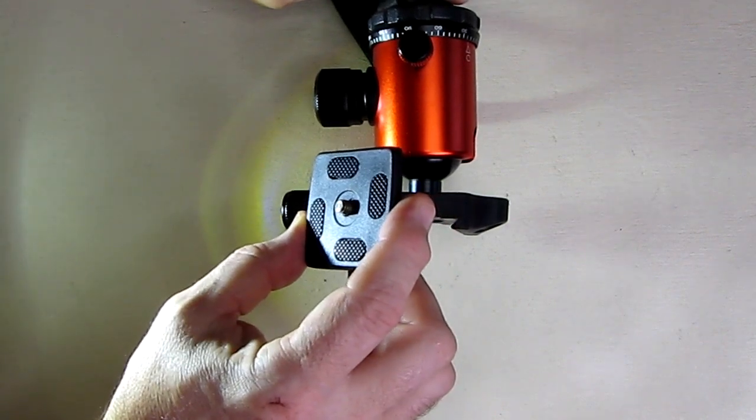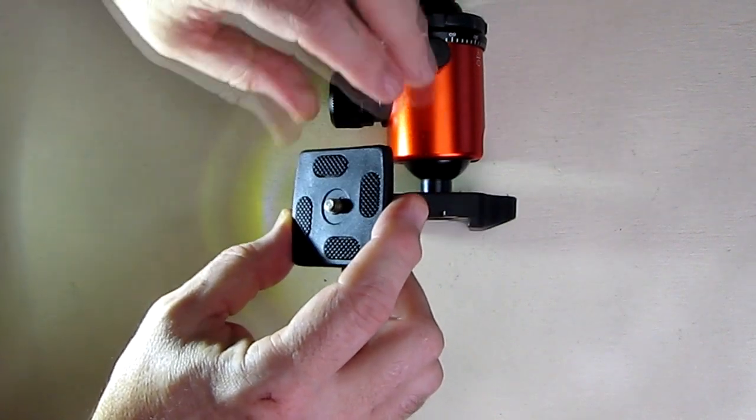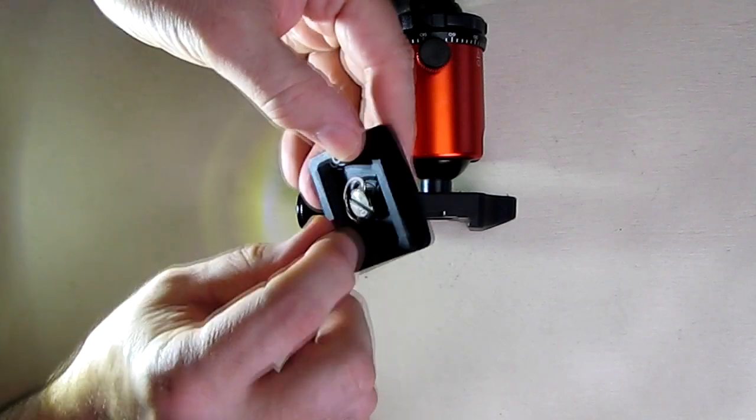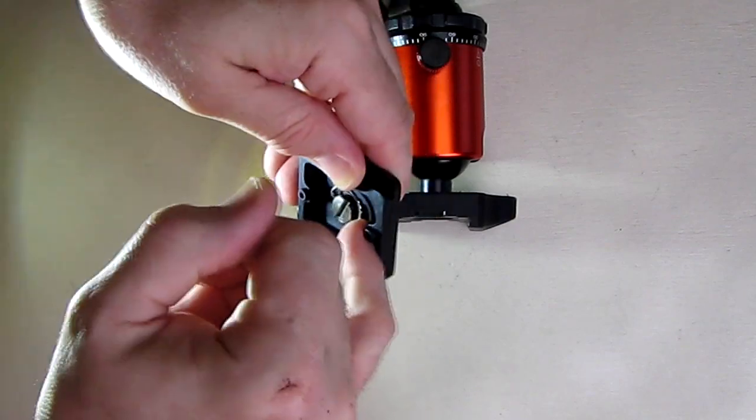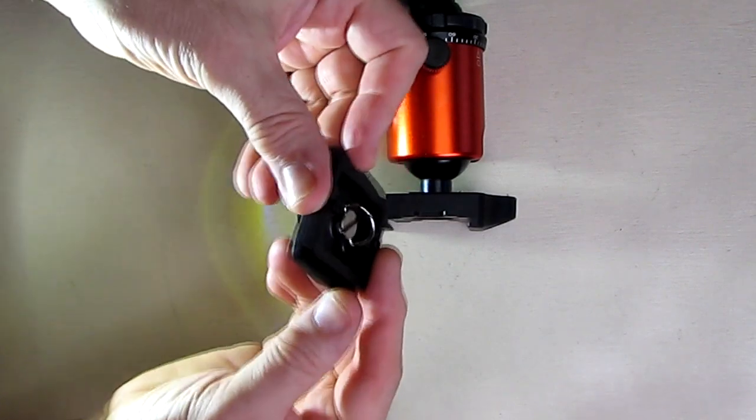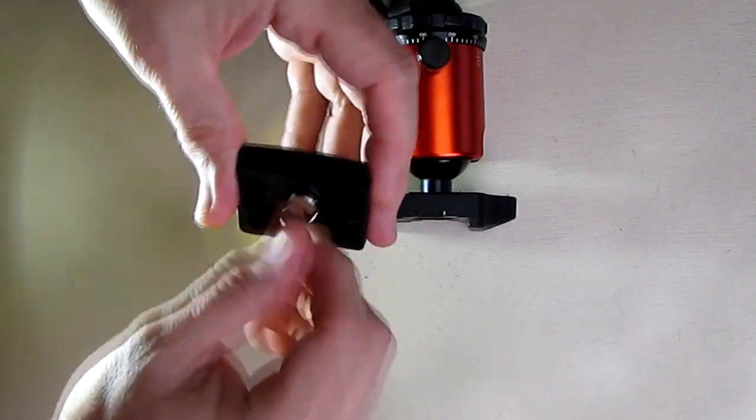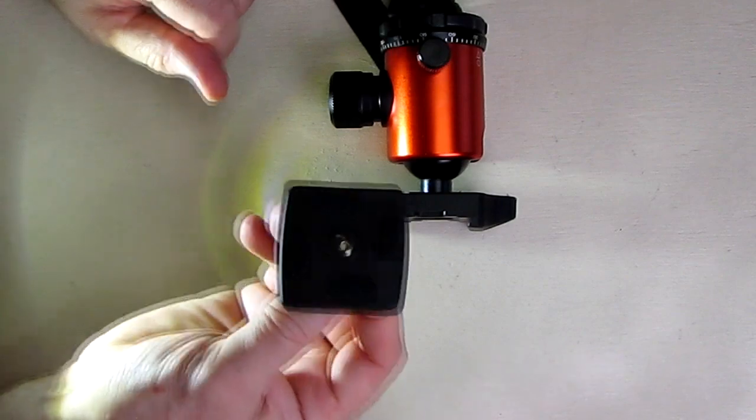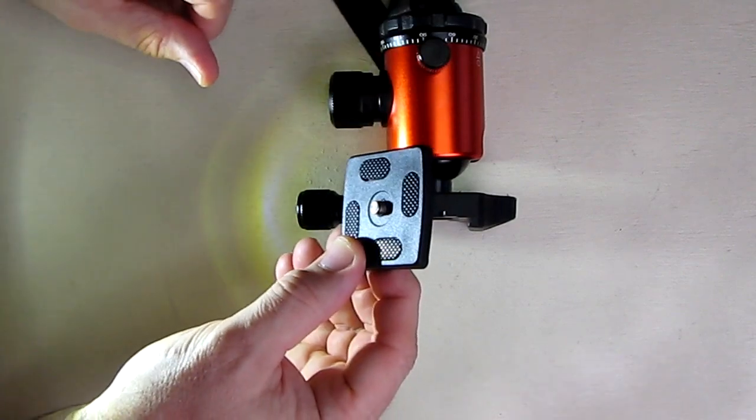You can see it has four little rubber pieces for friction. On the bottom it has a little arm that you lift up and then you can rotate that to tighten it to your camera—very simple and effective.